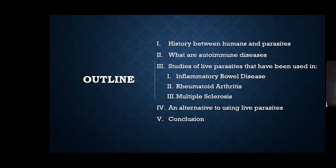The outline I have prepared today covers: the history between humans and parasites, what exactly autoimmune diseases are, studies that have used live parasites such as in inflammatory bowel disease (IBD), rheumatoid arthritis (RA), and multiple sclerosis (MS). I'll also discuss an alternative to using live parasites, and then conclude.